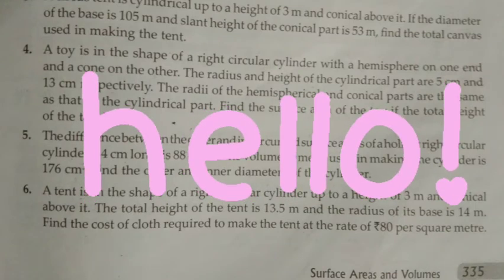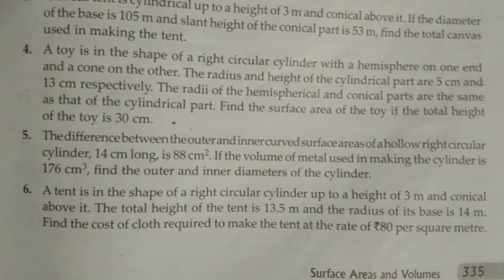Hello, in this video I'll explain question number five. It says the difference between the outer and inner curved surface areas of a hollow right circular cylinder 14 centimeter long is 88 centimeter square. If the volume of the metal used in making the cylinder is 176 centimeter cube, find the outer and inner diameters of the cylinder.